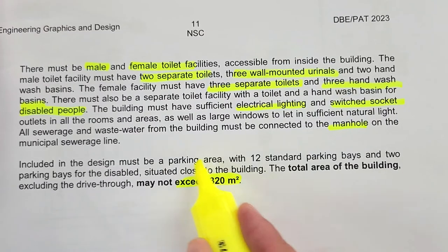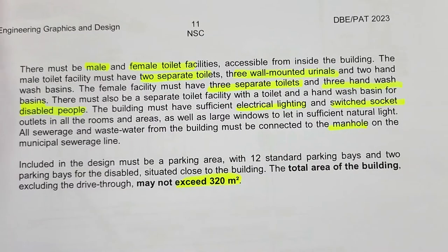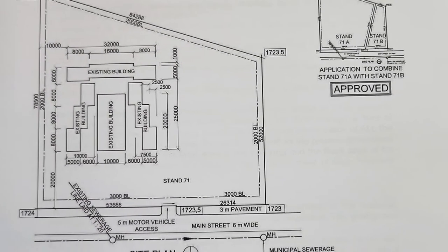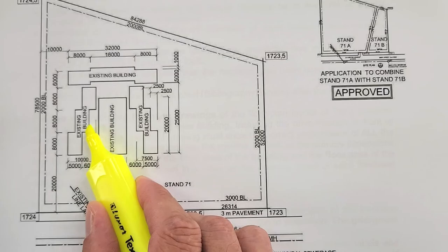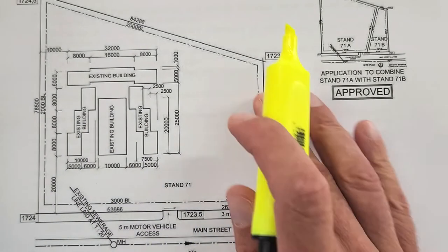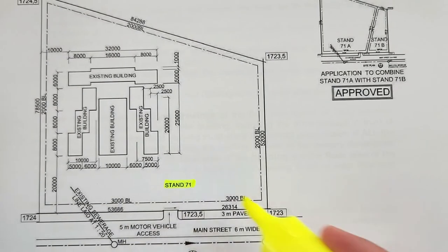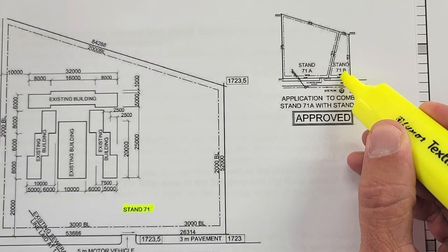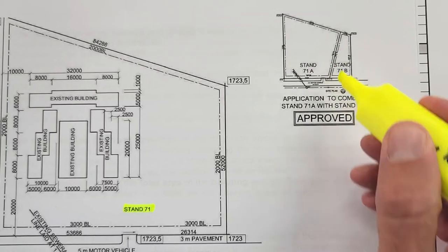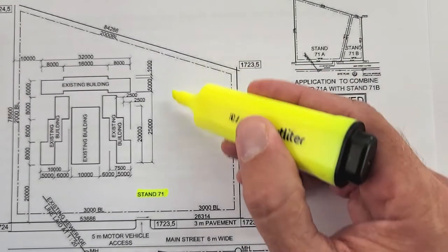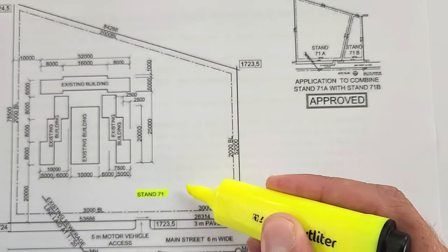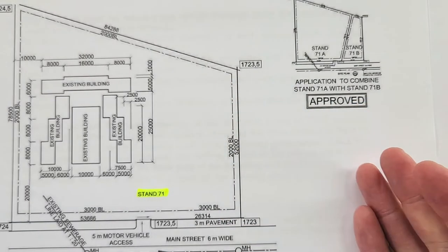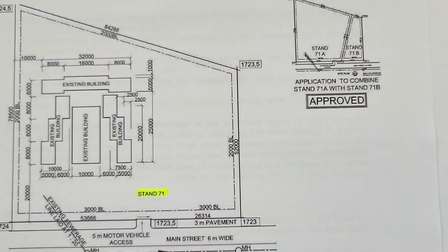Your total design must not exceed 320 square meters. The site plan provided shows the existing bed and breakfast, with the stand called Stand 71, which was initially subdivided into 71A and 71B — the PAT describes these two stands being consolidated, giving you a generous area more than big enough to include your conference center.